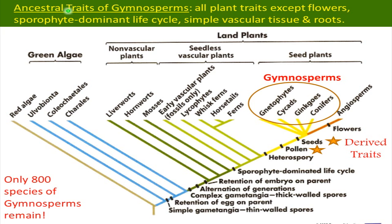Now we're looking at our cladogram of plants. We can see the ancestral traits of gymnosperms — they have all plant traits except flowers. That's what separates angiosperms and gymnosperms. They have a sporophyte dominant life cycle, simple vascular tissue and roots. If we take a look at our cladogram, we can see our green algae group, and they have things like simple gametangia and retention of egg on the parent.